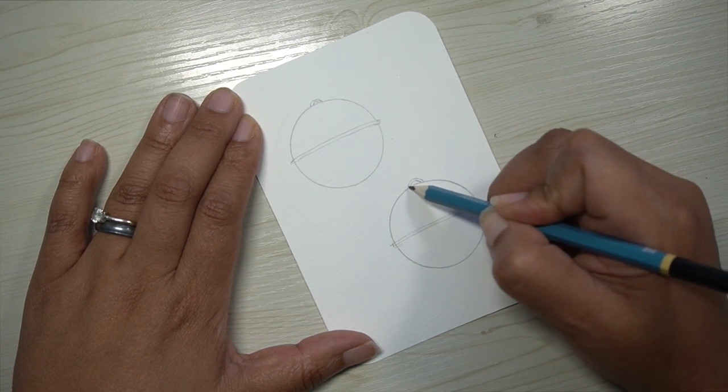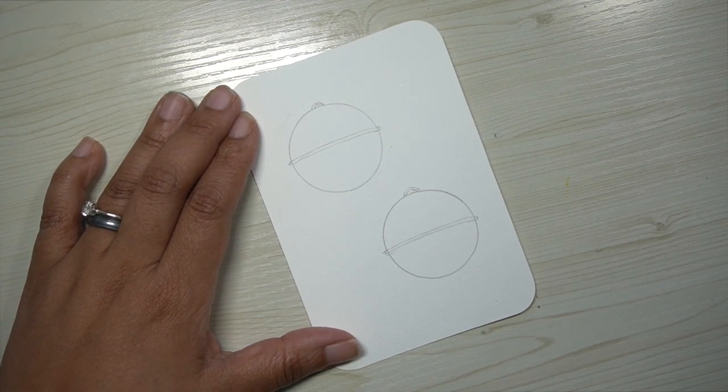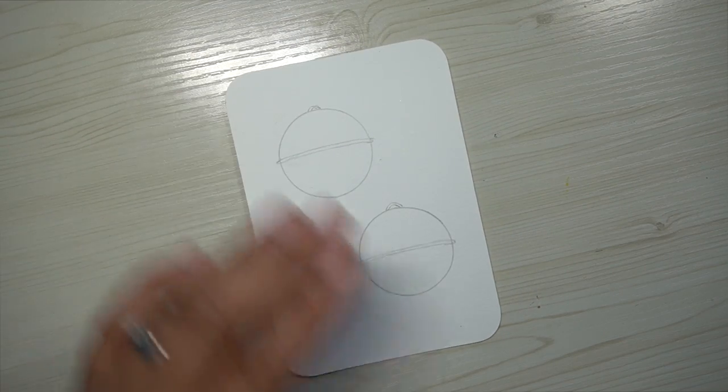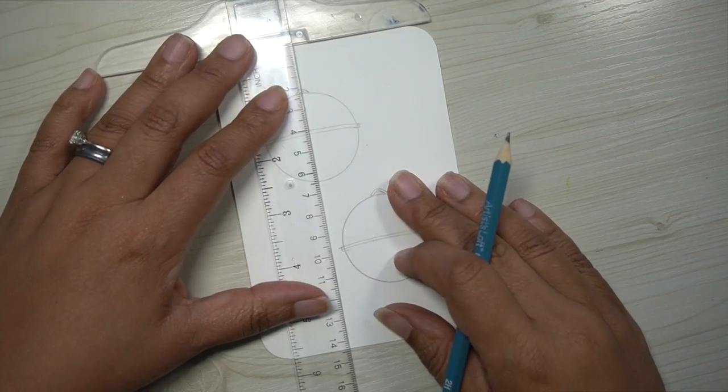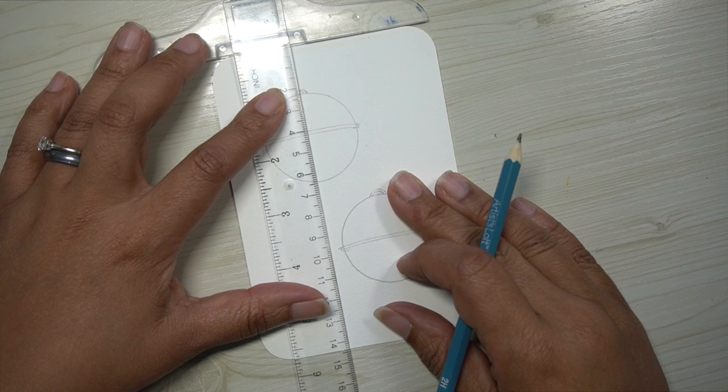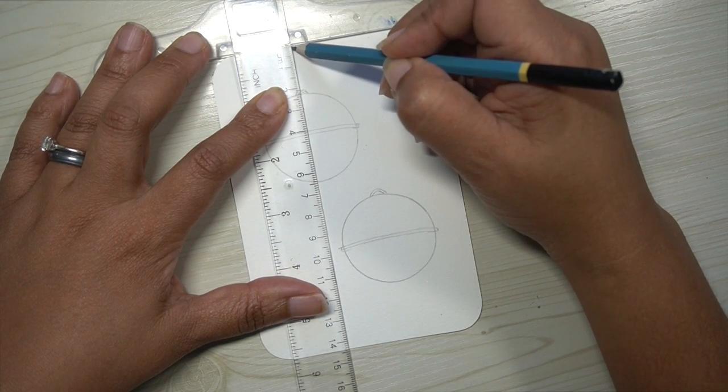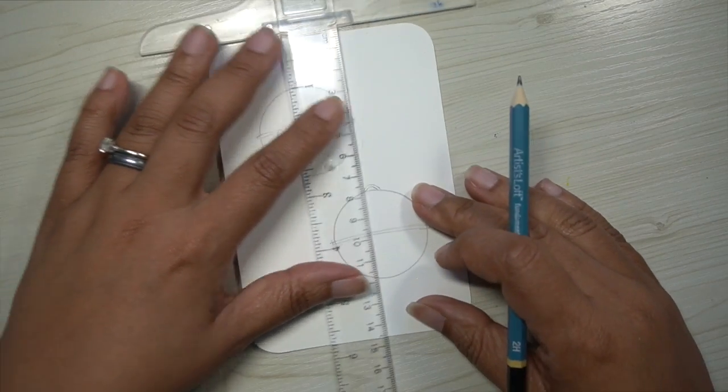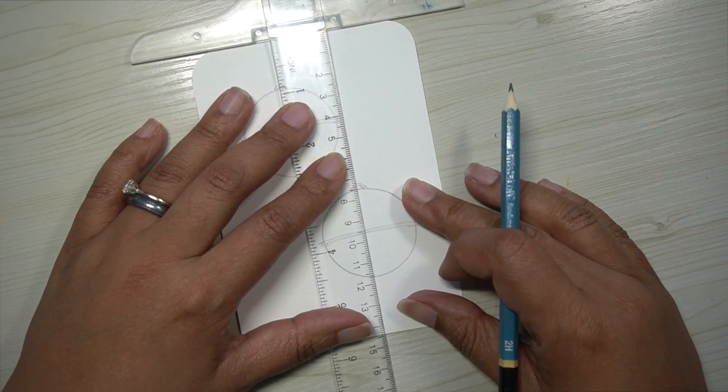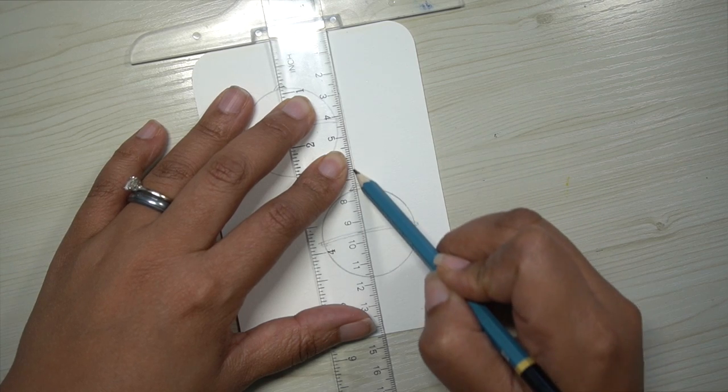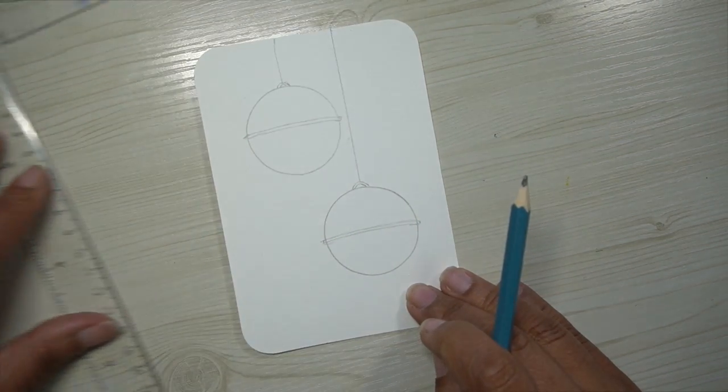And then we are going to either freehand or use a ruler. I prefer to use a ruler because just as I can't draw a circle, I cannot draw a straight line. So I am going to use a ruler to do a straight line from the hook on the top of each circle to the very, very top of my postcard or my paper. You can use any watercolor paper that you have.